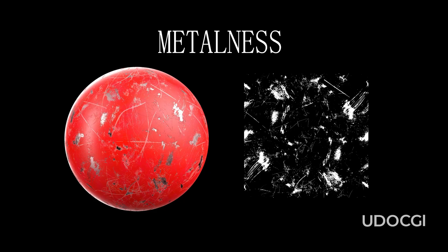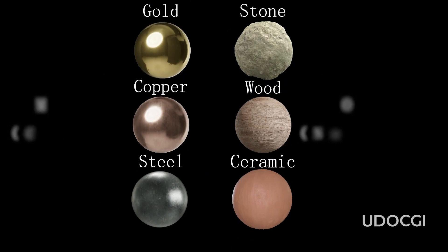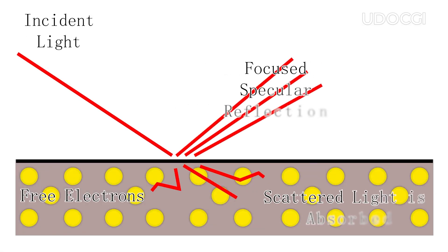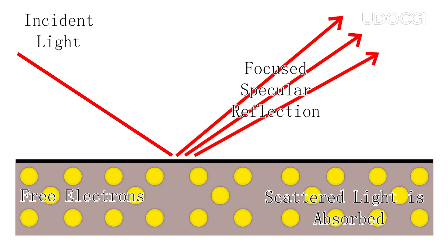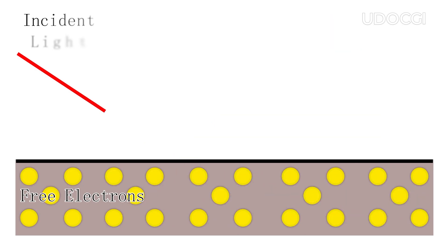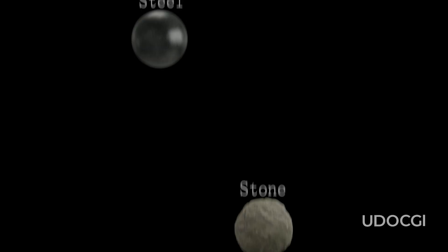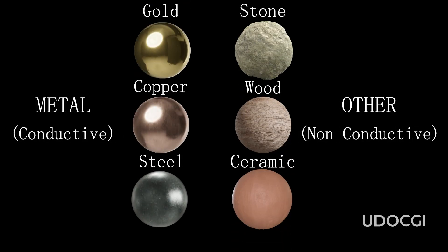The metallic map in Blender indicates which parts of a material are metallic. Metals are conductive and generally have high reflectivity, differing significantly from non-conductive materials like stone, wood, and ceramics. Metals have free electrons that absorb and re-emit light, leading to high reflectivity. Light does not penetrate deeply into metals but is absorbed near the surface with minimal scattering or diffusion. Therefore, metallic values should not be used for non-metallic materials, as the properties of metals don't apply to other materials.